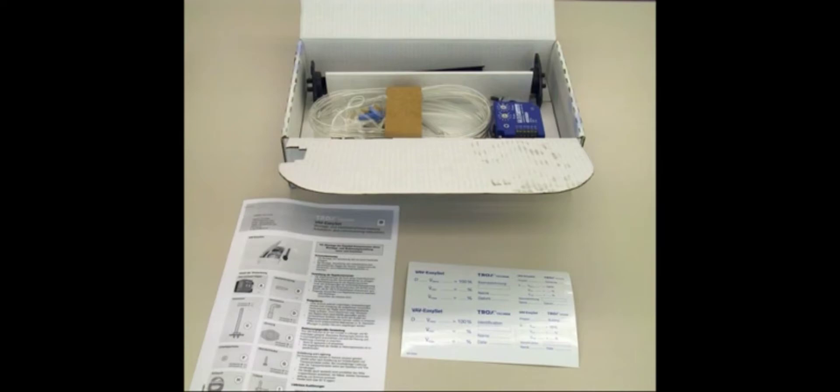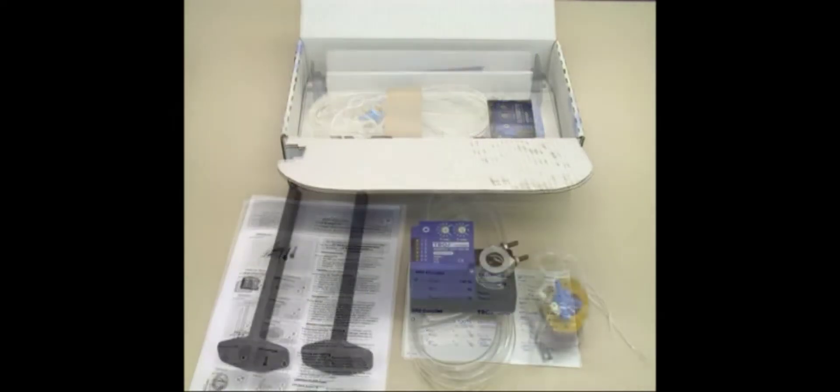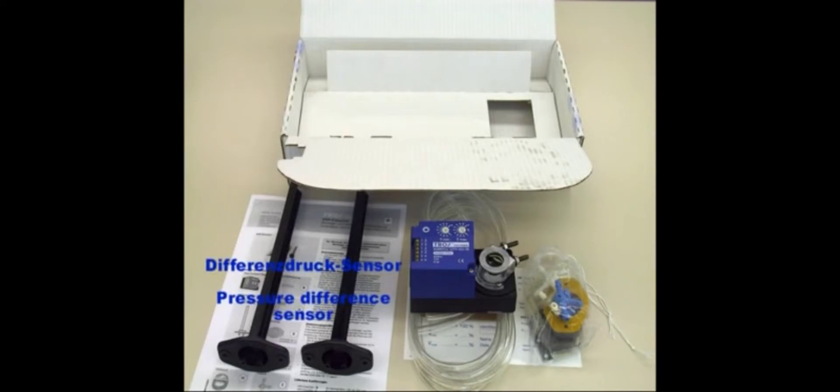The components of the Easy-Set kit are a newly developed differential pressure grid to measure the airstream flow according to the dynamic differential principle, Trox compact controller, tubes, and various accessories.